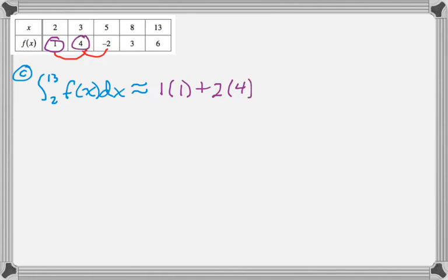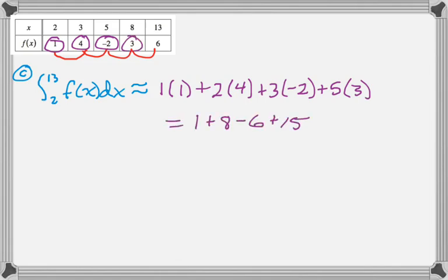and then I'm going to go from 5 to 8, which has a length of 3. And the left endpoint is negative 2, and then I'm going to go from 8 to 13, which has a length of 5, and the left endpoint is 3. And then we just sum all those up. So we get 1 plus 8 minus 6 plus 15, and that'll give us 18.